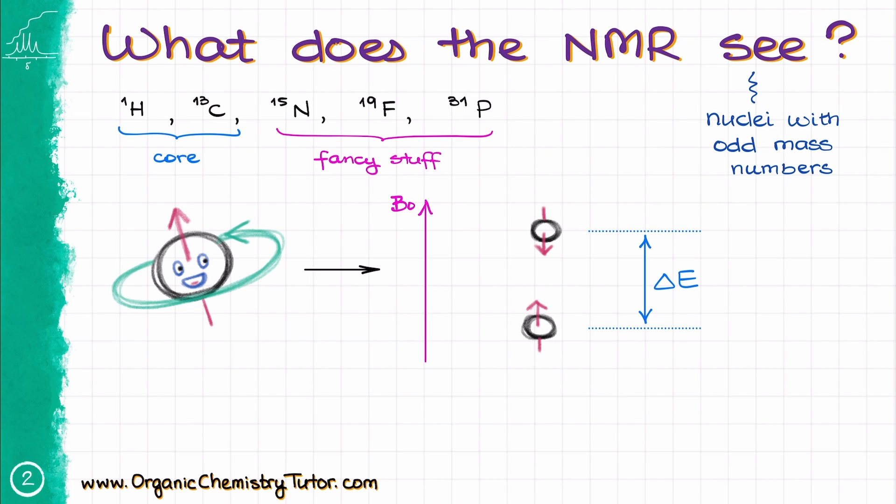And since it takes more energy to go against the flow rather than align yourself with the field, the NMR instrument measures the energy that it takes to flip the spin of the nuclei. And this energy does depend on the chemical environment of our nuclei. In this video, we'll focus on the H NMR and the C NMR as those are the two core techniques for the structure determination.